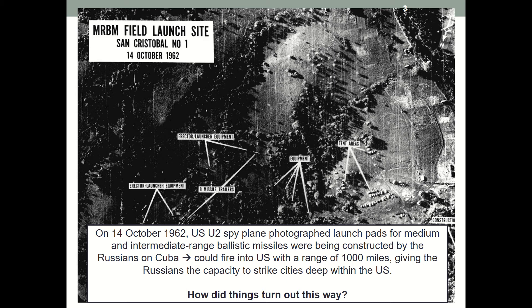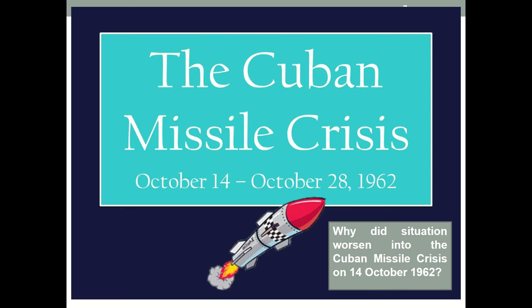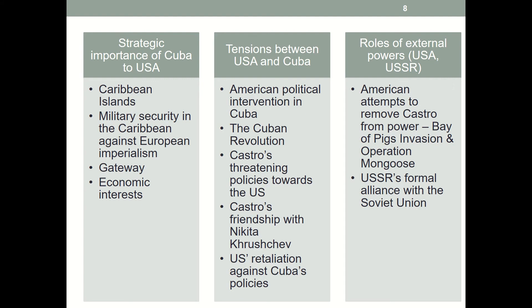For today's lesson, we are going to look at how things turned out this way. Starting from the very beginning — the Cuban Missile Crisis, 14 October to 28 October 1962. To understand why the situation worsened into the Cuban Missile Crisis, we need to examine three aspects: the strategic importance of Cuba to the United States, the tensions between USA and Cuba, and the roles of external powers.